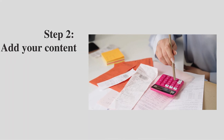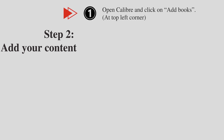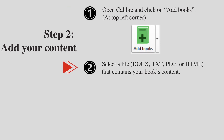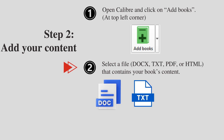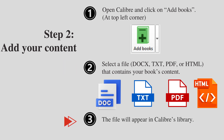Step 2: Add your content. First, open Calibre and click on Add Books. Second, select a file — Docs, Text, PDF, or HTML — that contains your book's content. Third, the file will appear in Calibre's library.